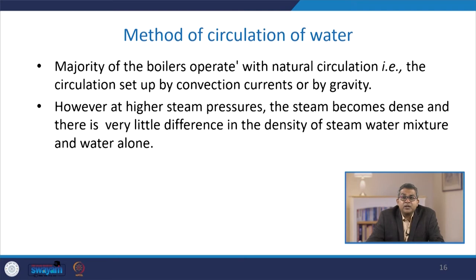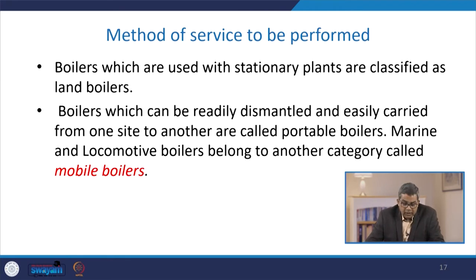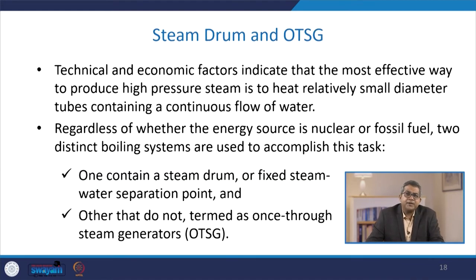Regarding the method of circulation of water, the majority of boilers operate with natural circulation, which is circulation set up by convection currents or gravity. Density difference is also attributed to this. At higher steam pressure, steam becomes dense and there is very little difference in density between the steam-water mixture and water alone. For the method of service, boilers used for stationary plants are classified as land boilers. Boilers that can be dismantled and easily transported are called portable boilers; marine and locomotive boilers fall in this category too.